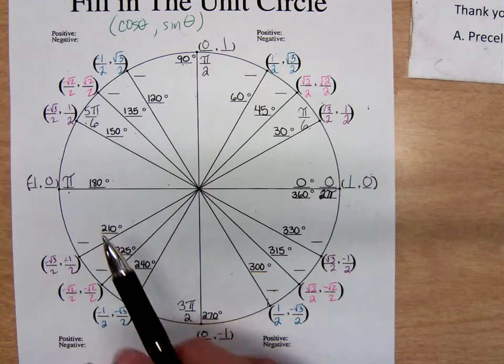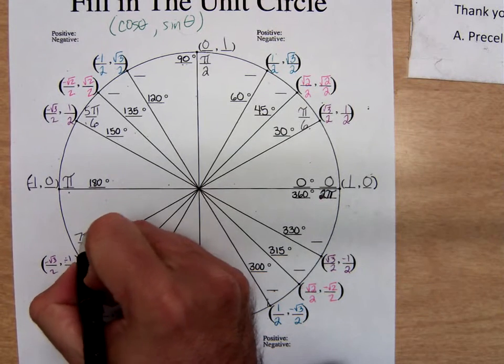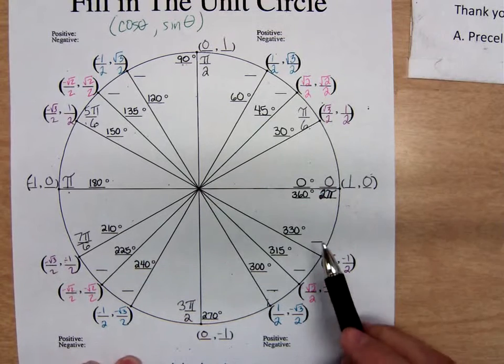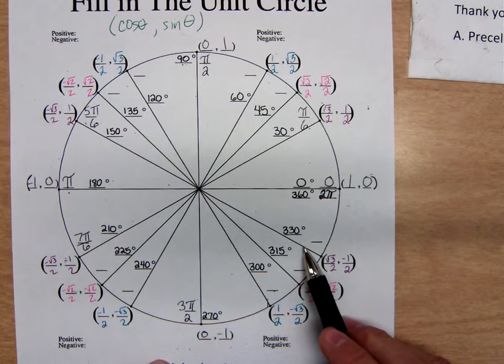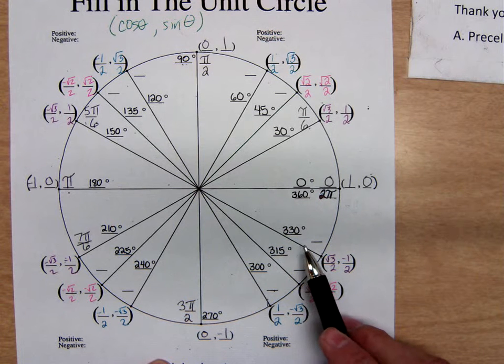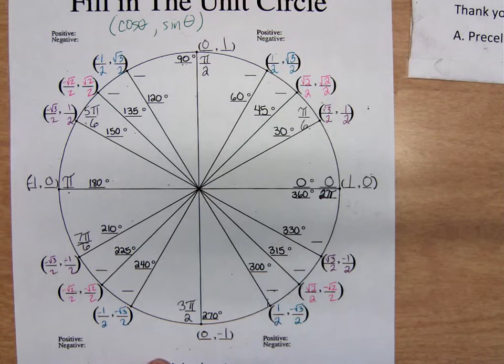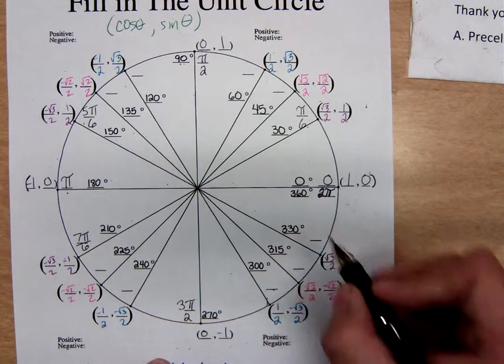What do I multiply 30 by to get 150? Well, 5. So, 5 pi over 6. Let's do the same thing with 210. What do I multiply 30 by to get 210? So, 7 pi over 6. And finally, the last one here that has the 30 degrees as a reference angle, the 330 degree. What do I multiply 30 by to get 330? 11. So, 11 pi over 6.